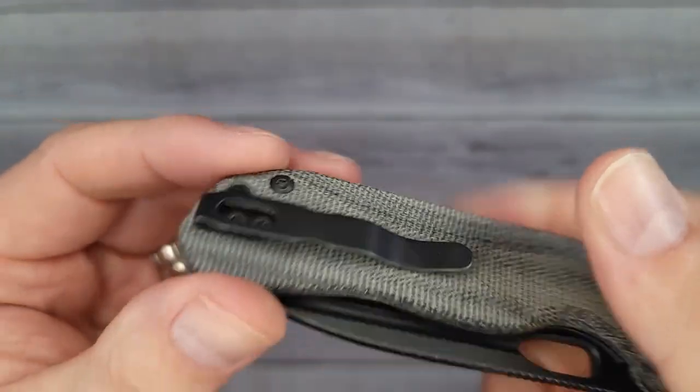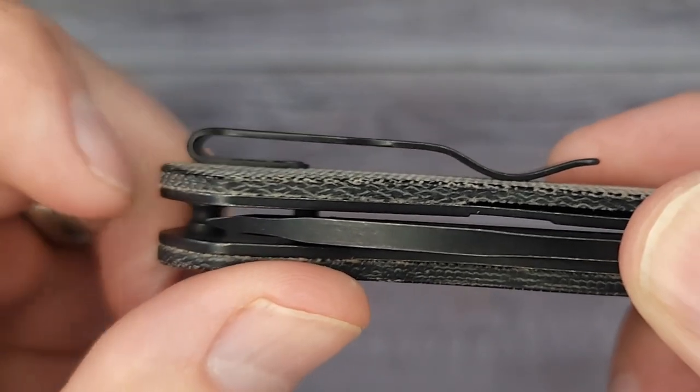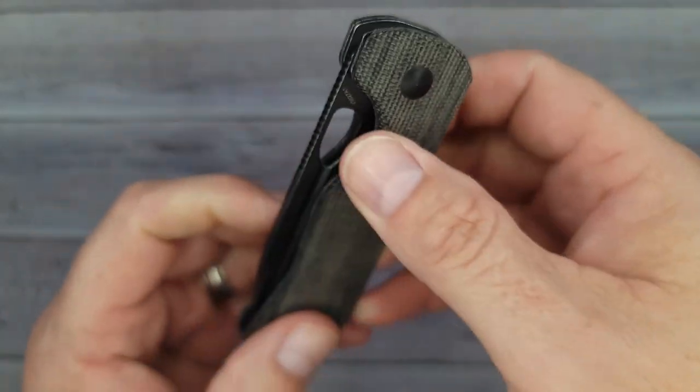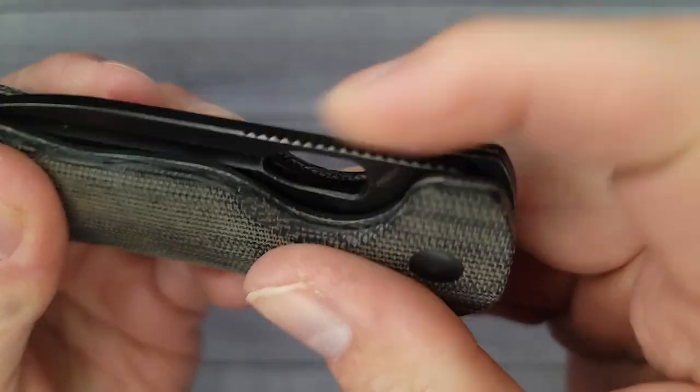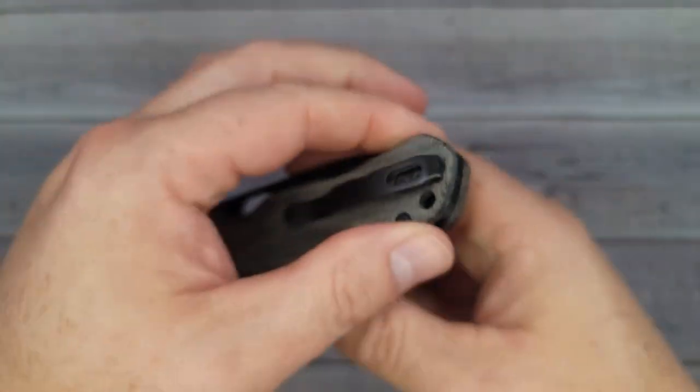And check it out, look at this. We have a reversible pocket clip and it is sitting on top of the scales but we do have flat screws so that's very nice. Feels very snappy and pretty good jimping. Could be a little more aggressive but it's not too shabby.